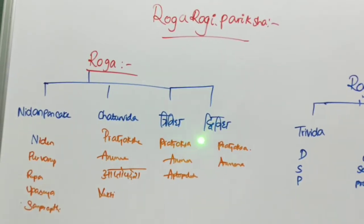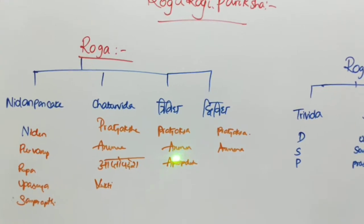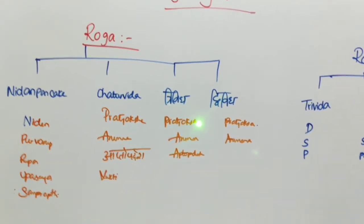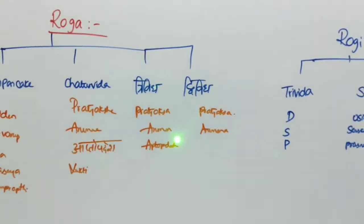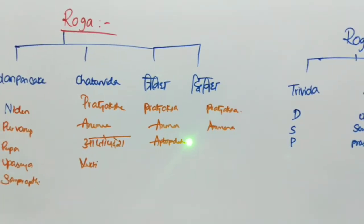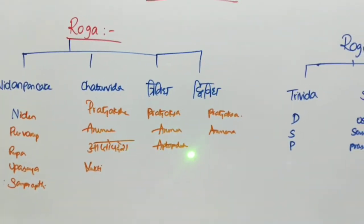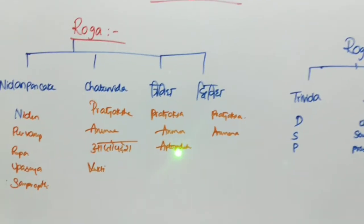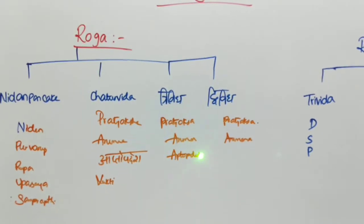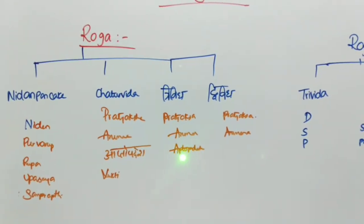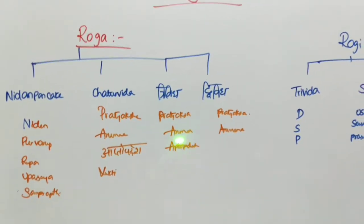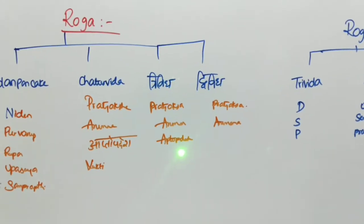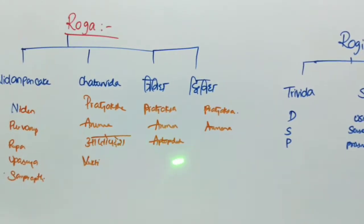Trividha Pariksha consists of Pratyaksha, Anumana, and Aptopadesha. Pratyaksha is direct examination, Anumana is inference, and Aptopadesha refers to the Vachana told by our Aptas — Charaka, Sushruta, and the Acharyas. The detailed definition and reference for Aptopadesha can be found in Padarthavignana, in the Pramana chapter.